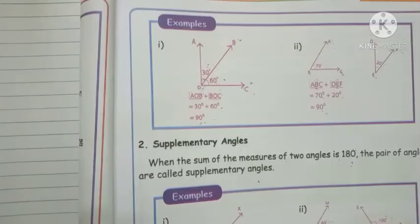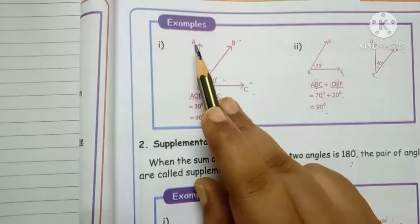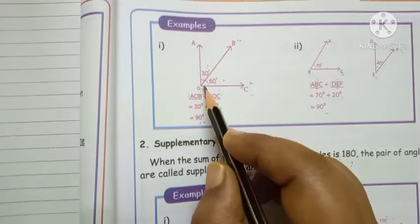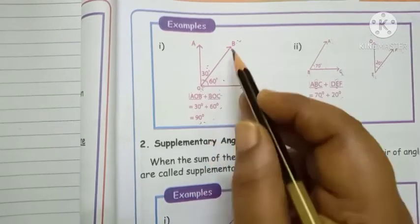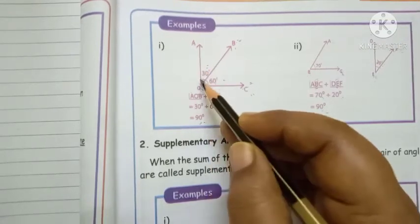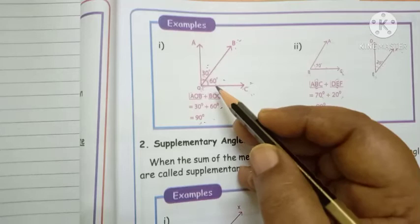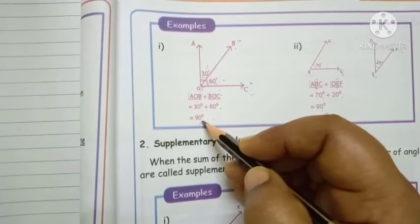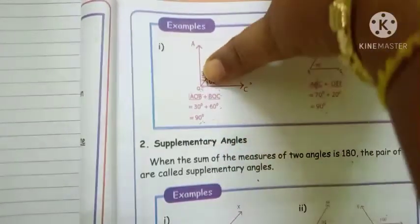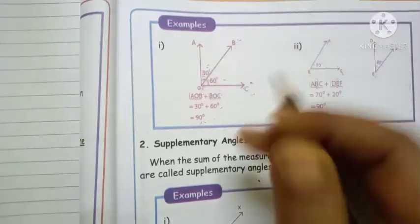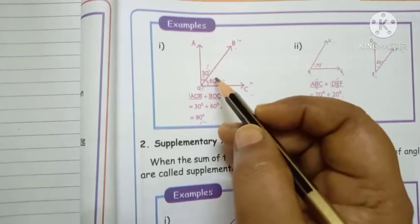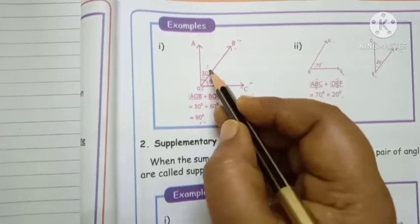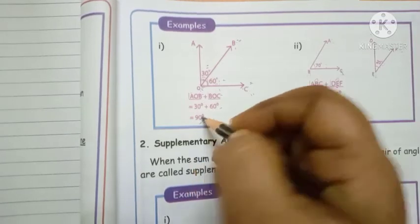Let me show an example. Draw three rays from point O — A, O, C. One angle is thirty degrees and the other is sixty degrees. Thirty plus sixty equals ninety degrees. This gives a right angle. The right angle is divided into two acute angles — sixty is one acute angle, thirty is another. These two acute angles joined together give ninety degrees. This is called a complementary angle.